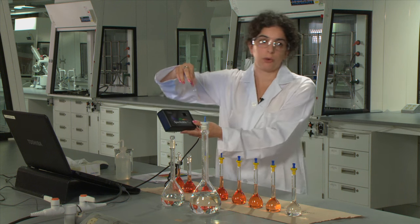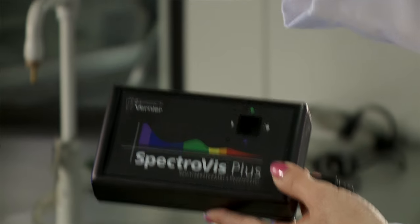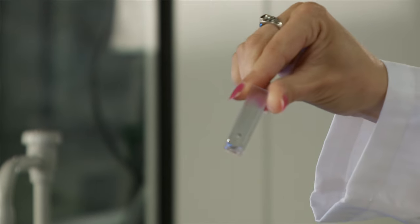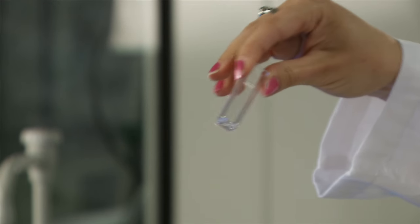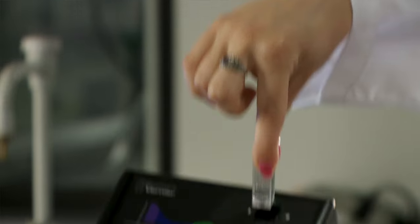The cell or otherwise known as a cuvette looks like this. It's got a clear side and it also has a frosted side and you want to ensure that the clear side is facing the detector and the lamp.